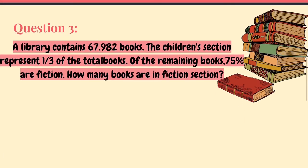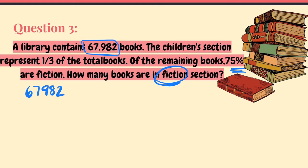Question number three: a library contains 67,982 books and the children's section represents one third of the total books. Of the remaining books, 75% are fiction — so how many are in the fiction section? We want to know how many books are in the fiction section. Take it step by step. One third of the total is the children's section, so divide 67,982 by three, and you get 22,660 children's books.